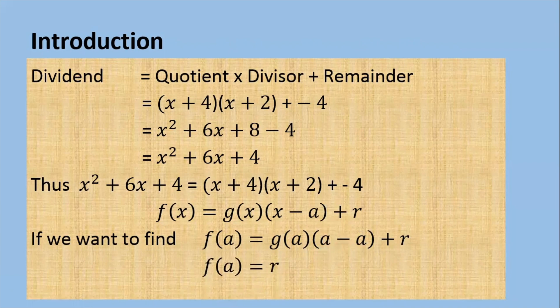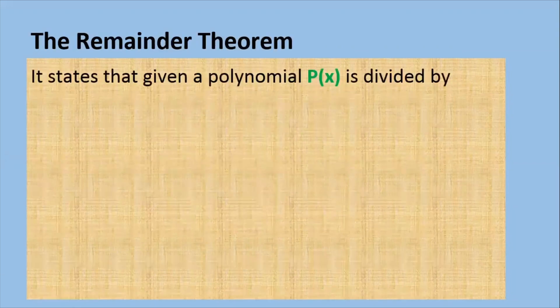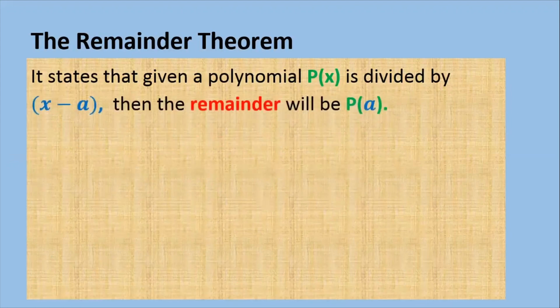That's where the remainder theorem comes in. The remainder theorem states that given a polynomial p of x, which is divided by x minus a, the remainder will be p of a. That is, you equate x minus a to 0, x will be equal to a, and you replace the x in the polynomial by a.